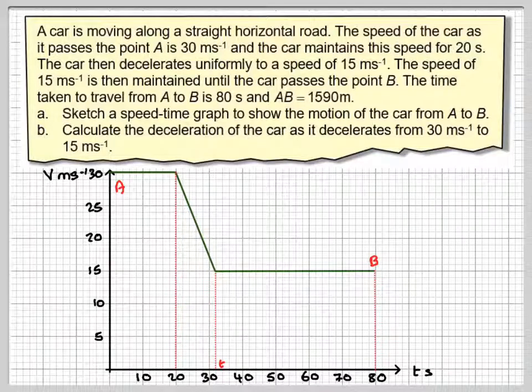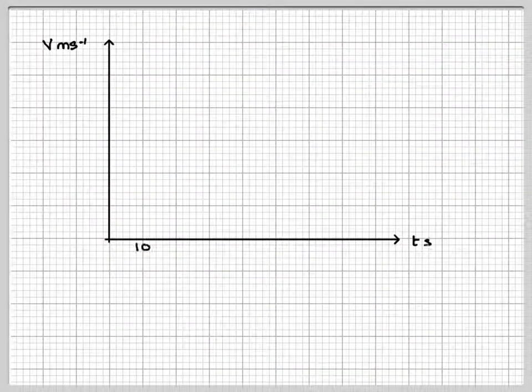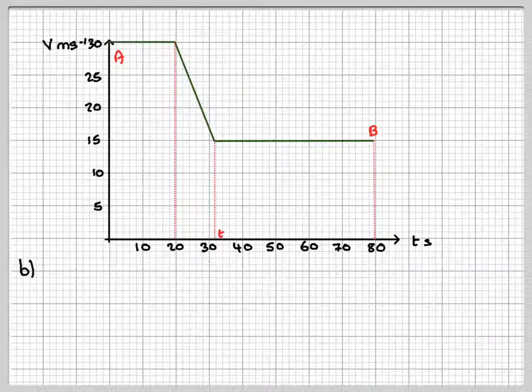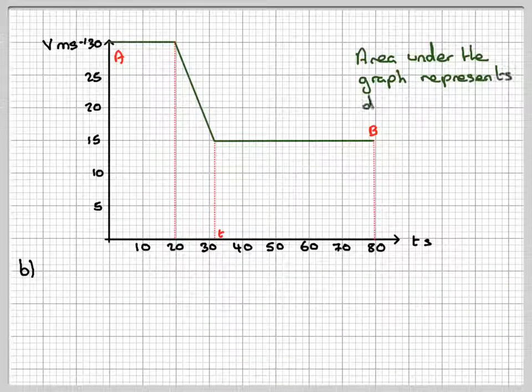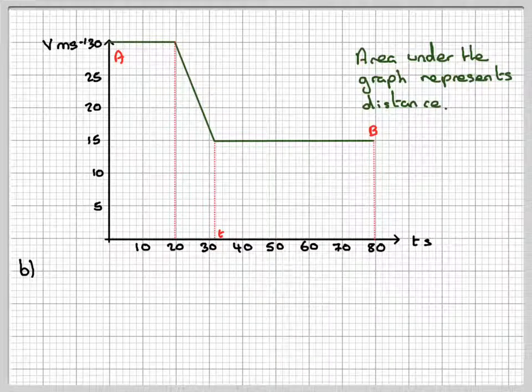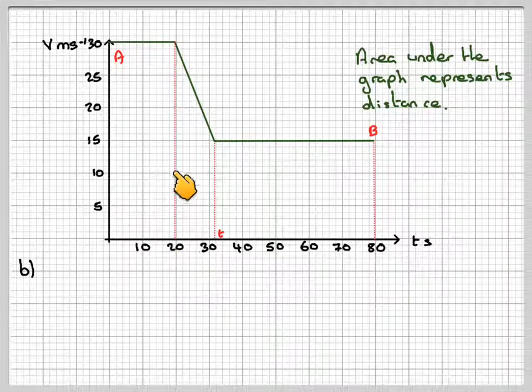But we do know it travels 1590 and we know the distance is given by the area underneath the graph. Drawing the graph out again like that, we know the area under the graph represents distance. What have we got here? We've got a rectangle.